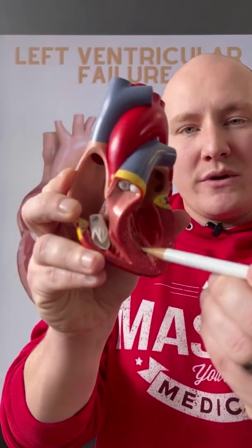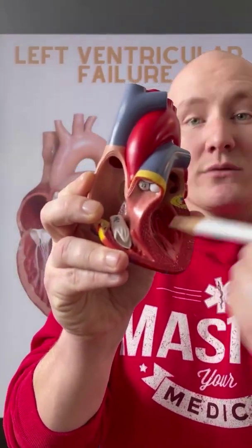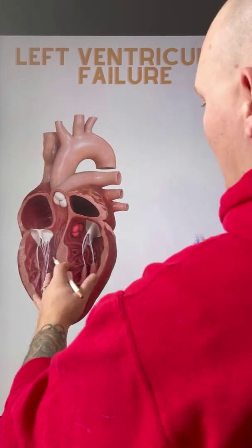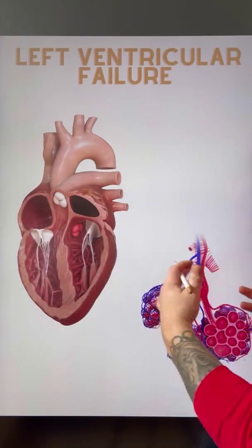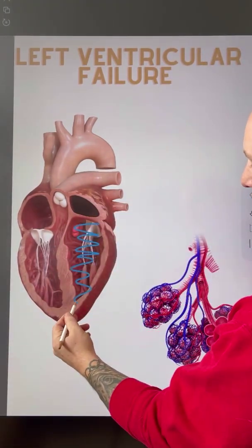Why does pulmonary edema occur when we have left-sided failure, left ventricular failure? Well, let me show you. It's all due to a pressure problem within the alveoli that's occurring because of the failure of this left ventricle.